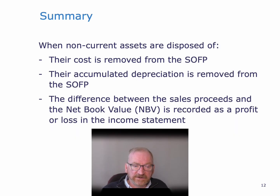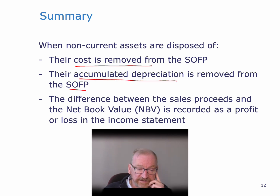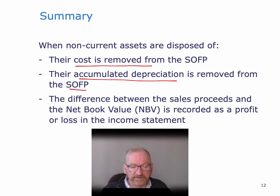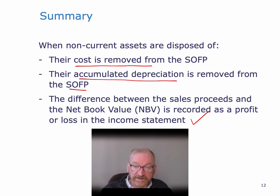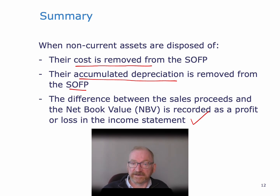So when non-current assets are disposed of, we need to remove their costs from the statement of financial position, we need to remove their accumulated depreciation from the statement of financial position, and the difference between the sales proceeds and the net book value is recorded as a profit or loss in the income statement. Then we are done with disposing of the asset — it's gone out of the balance sheet, and we have recorded whatever profit or loss we made on disposing of the item in the income statement. The asset is now gone and done and dusted.